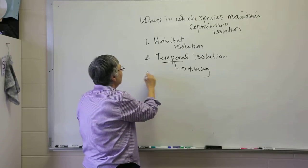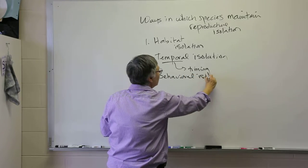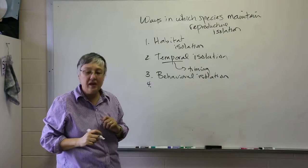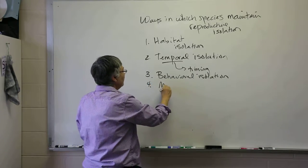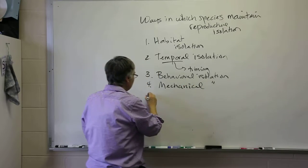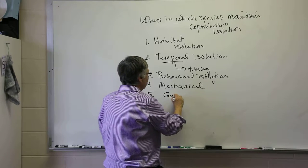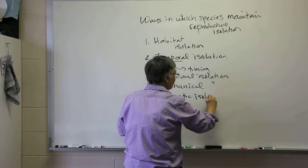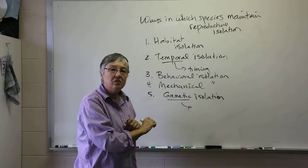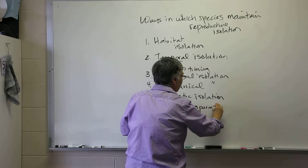A third category is behavioral isolation. A fourth category is mechanical isolation. And the last category is what is called gametic isolation, gametic referring to the gametes or sperm and egg.